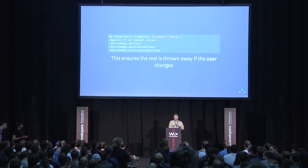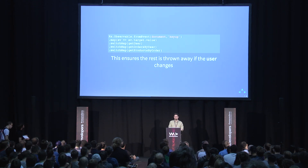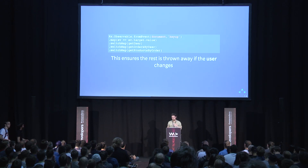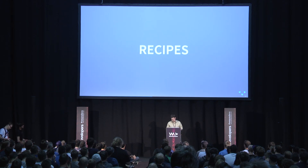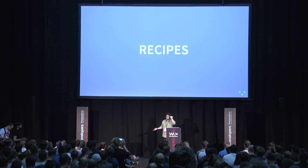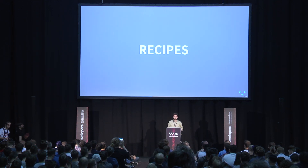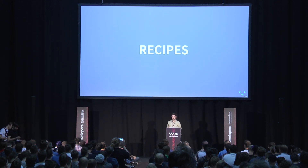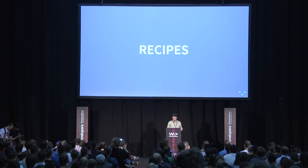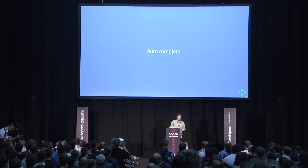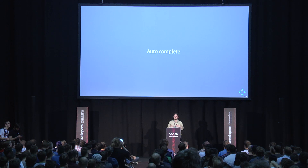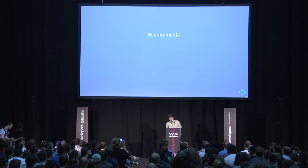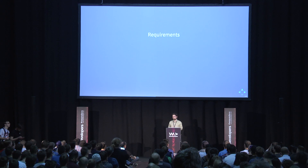For example, you have getUser, getOrdersByUser, and getProductsByUser — this is when calls need to happen in a certain order with a dependency between them. This wouldn't be complete without recipes. Let's look at autocomplete — a very common example that lends itself elegantly to RxJS modeling. First, let's talk about the requirements of autocomplete: what does it mean?